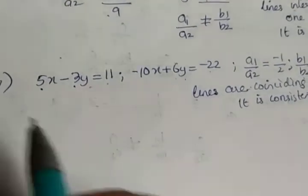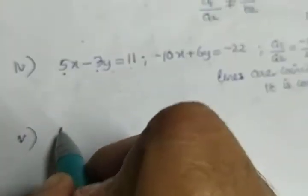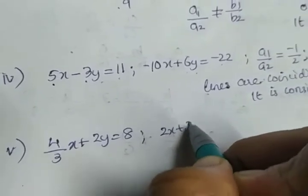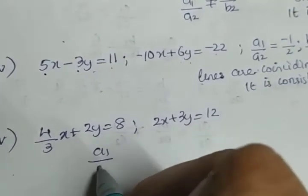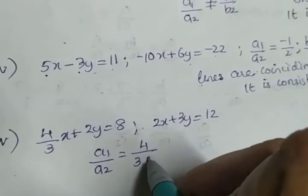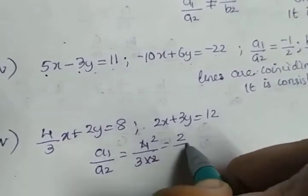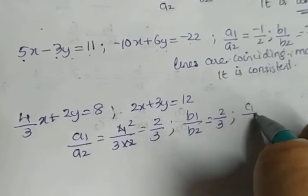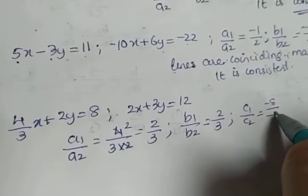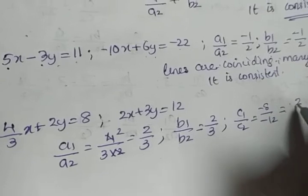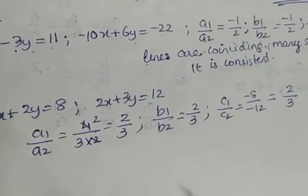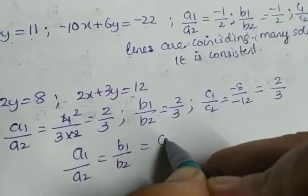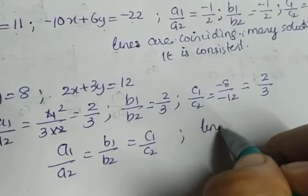Moving to the last part of the question, the fifth part. The equation given is (4/3)x plus 2y is equal to 8 and 2x plus 3y is equal to 12. a1 by a2 is (4/3) divided by 2, so 2 by 3 after simplification. b1 by b2 is directly 2 by 3. c1 by c2 is minus 8 by minus 12, which is also equal to 2 by 3. So a1 by a2 is equal to b1 by b2 is equal to c1 by c2. Therefore the lines are coincident.